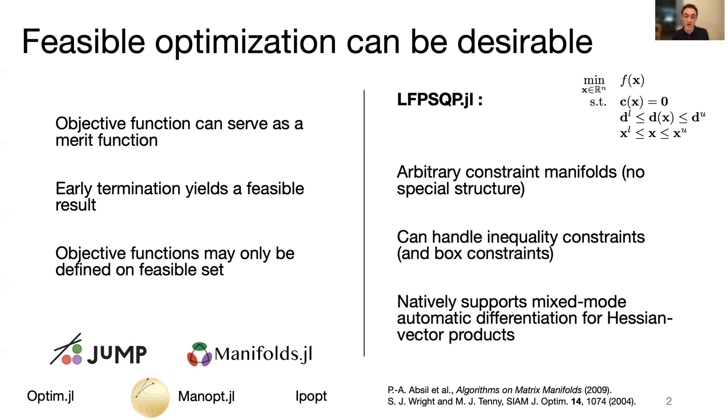and its native support of automatic differentiation, and specifically mixed-mode automatic differentiation for Hessian vector products using the rich ecosystem of AD tools that Julia features, in particular the classic forward and reverse diff packages.